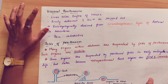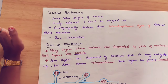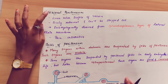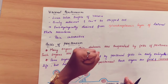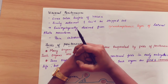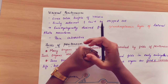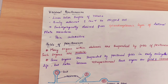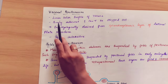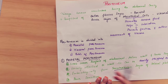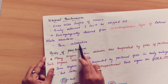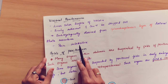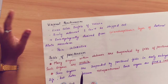The visceral peritoneum lines the outer surface of the viscera. It is firmly adherent and cannot be stripped out. Embryologically, it is derived from the splanchnopleuric layer of the lateral plate of mesoderm. It is pain insensitive, so any injury to this layer cannot be directly felt as pain.